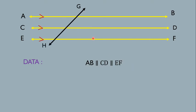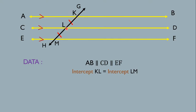Here is a transversal GH cutting AB, CD, and EF at K, L, and M respectively. Now look at segments KL and LM — the distance from K to L and L to M. They are called the intercepts. In this figure, the intercept KL is equal to the intercept LM. Intercept means the internal distances between the parallel lines, that is K to L and L to M.